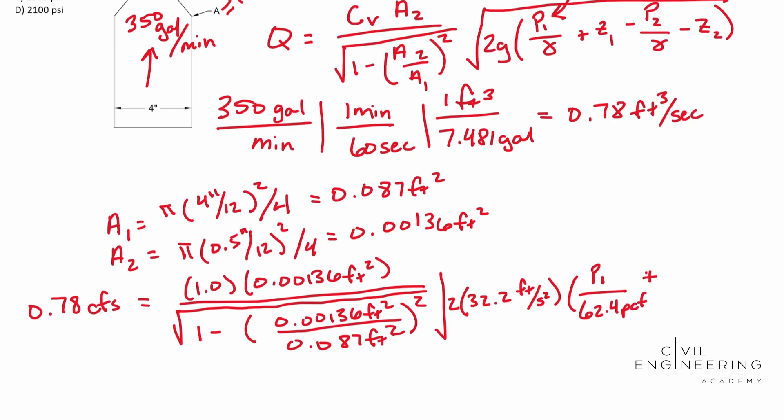And then we need to add our elevation, which is zero. We don't have any differential in elevation. It doesn't give that to us. And then our pressure at point two is open to the atmosphere. So that one's zero. And then our elevation at point two is zero as well. And we need to square root all of that.